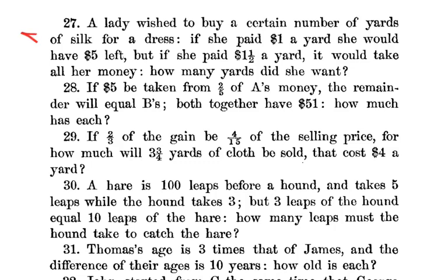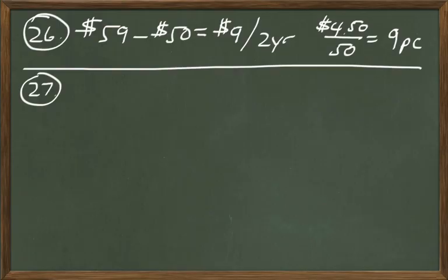In problem 27, a lady wishes to buy a certain number of yards of silk for a dress. If she pays $1 a yard she has $5 left, but if she paid $1.50 a yard it would take all her money. To solve this, focus on the $1 versus $1.50 difference. That half-dollar difference per yard wipes out the $5 she would have had left, so the number of yards equals $5 divided by $0.50, which is 10. She wants to buy 10 yards.